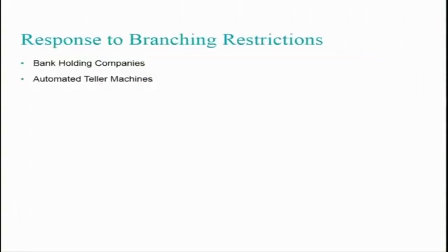In response to branching restrictions, there were bank holding companies. And another development supported by the IT revolution is the ATM — meaning even without a branch, even if there is a branching restriction, banks were allowed to start ATMs throughout the country, which practically serves as a branch. This is possible due to developments in IT.